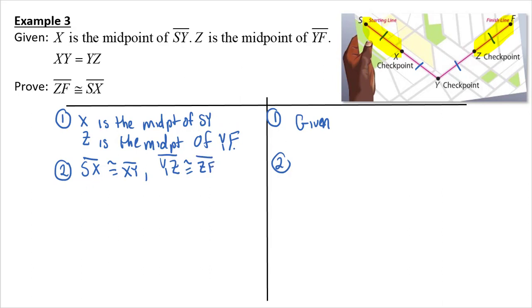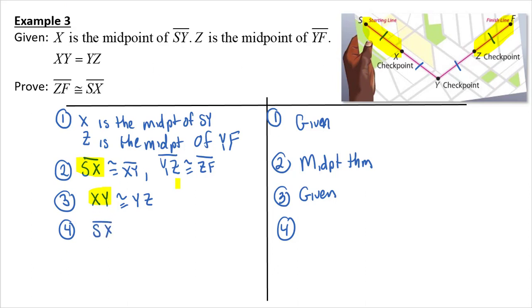I'm going to use those pieces of my given. And I'm going to say then that SX is congruent to XY, and YZ is congruent to ZF. And since those all came from this given, and the same reason, I can write them in the same step, and that reason is midpoint theorem. Now I'm going to write the second part of my given, XY is congruent to YZ. Now my fourth step, XY is equal to SX, so I'm going to substitute in. YZ is equal to or congruent to ZF. What's my reason there? Substitution.